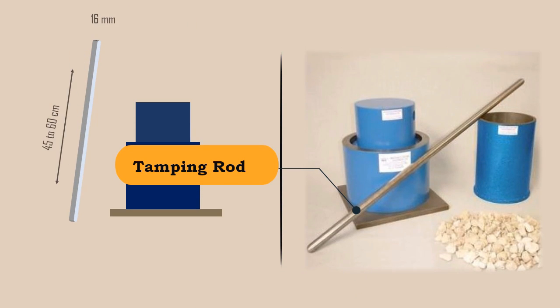A straight metal tamping rod of circular cross section 16 mm in diameter and 45 to 60 cm long, rounded at one end. A weight balance.